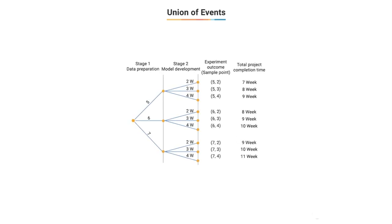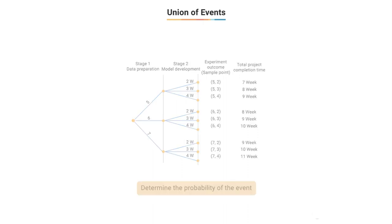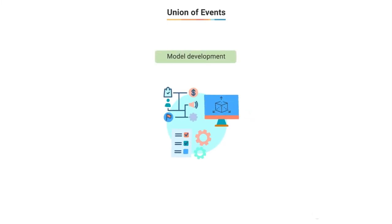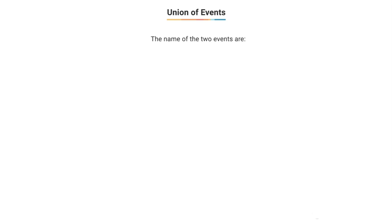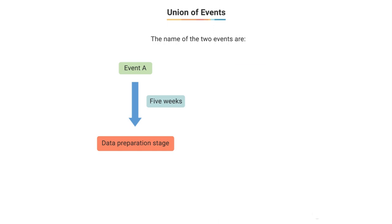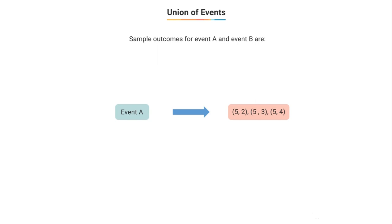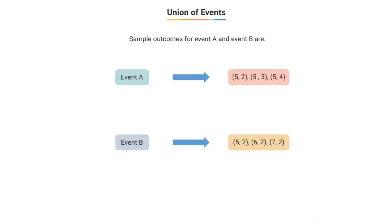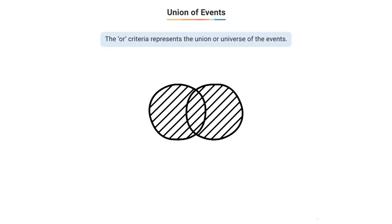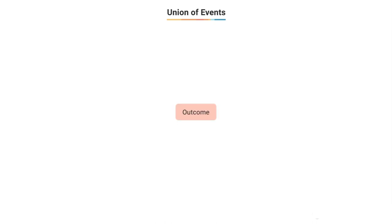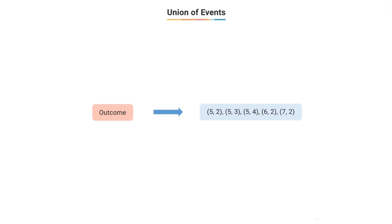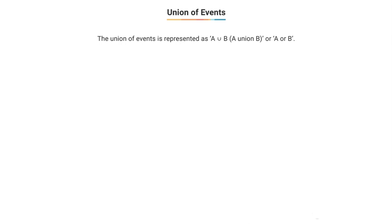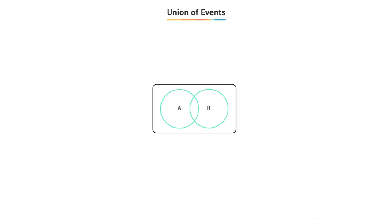Going back to the machine learning project: what is the probability of completing data preparation in 5 weeks or completing model development in 2 weeks? Event A outcomes: (5,2), (5,3), (5,4). Event B outcomes: (5,2), (6,2), (7,2). The OR criteria — the union of A and B — includes all outcomes belonging to either event: (5,2), (5,3), (5,4), (6,2), (7,2). This is represented as A ∪ B. In the Venn diagram, the entire green-shaded area represents the union of A and B.